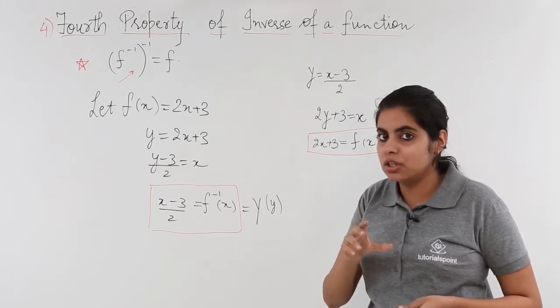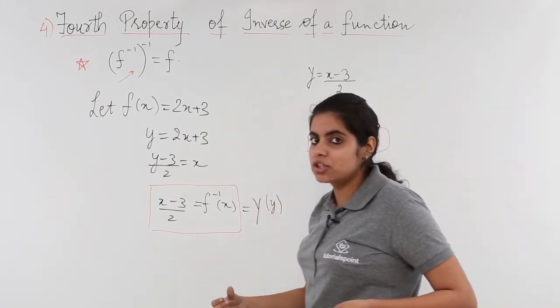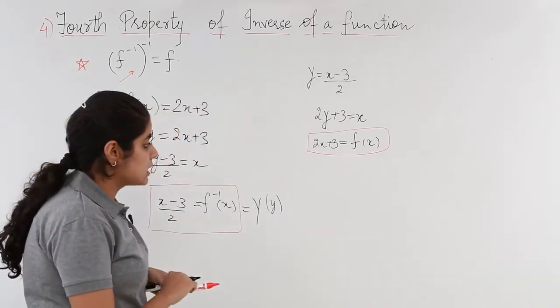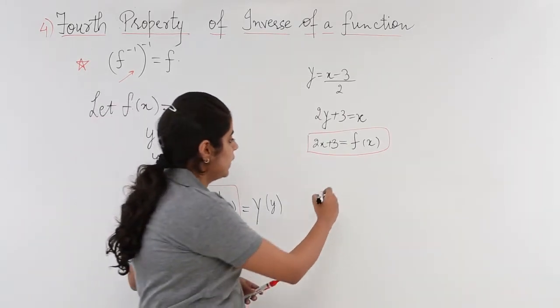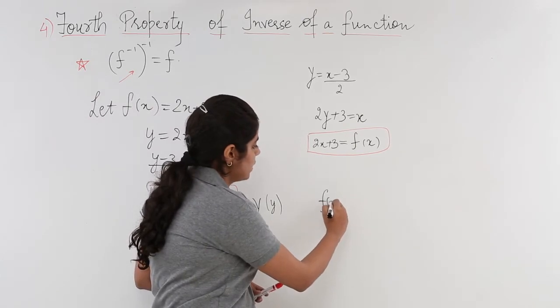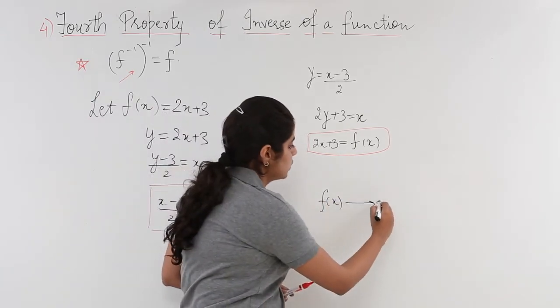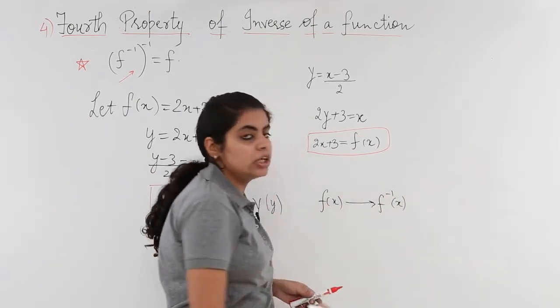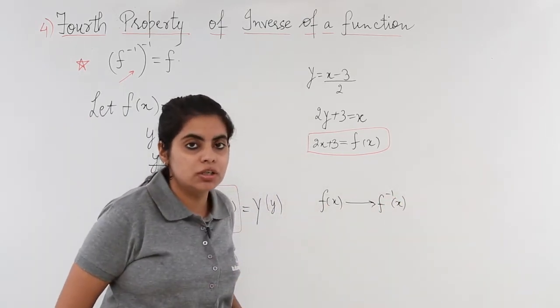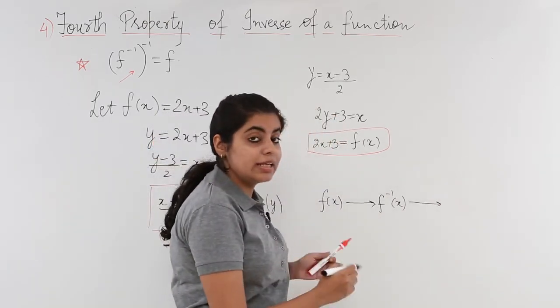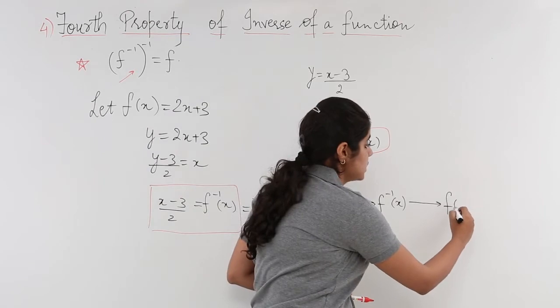We started with a function, took the inverse twice, and got the same function again. So if I have a function f(x) and I compute the inverse of that function, when I take the inverse again, I get the same function f(x) with which I started.